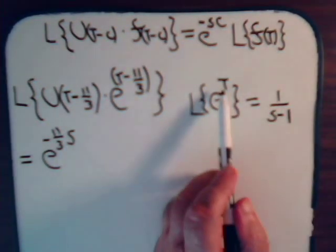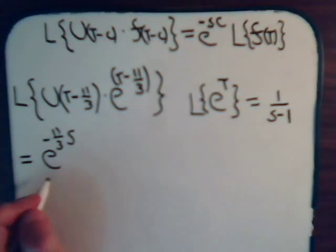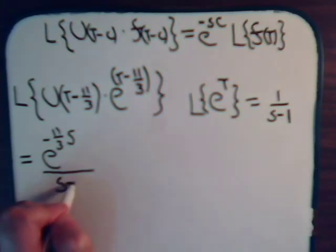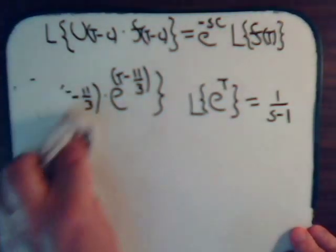If it was e to the minus t, then it would be s plus 1. So our answer, then, is e to the minus (11/3)s divided by (s minus 1). Again, pretty straightforward. Let's just consider a couple more examples here.